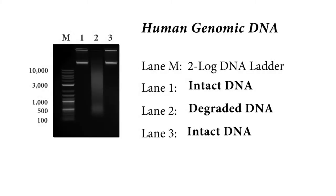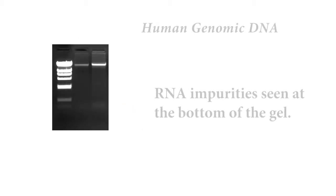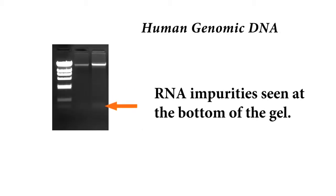DNA quality can be assessed using gel electrophoresis. Impurities such as detergents or probes, or damaged DNA, can usually be seen as a smear on the gel. RNA impurities are often seen at the bottom of the gel.